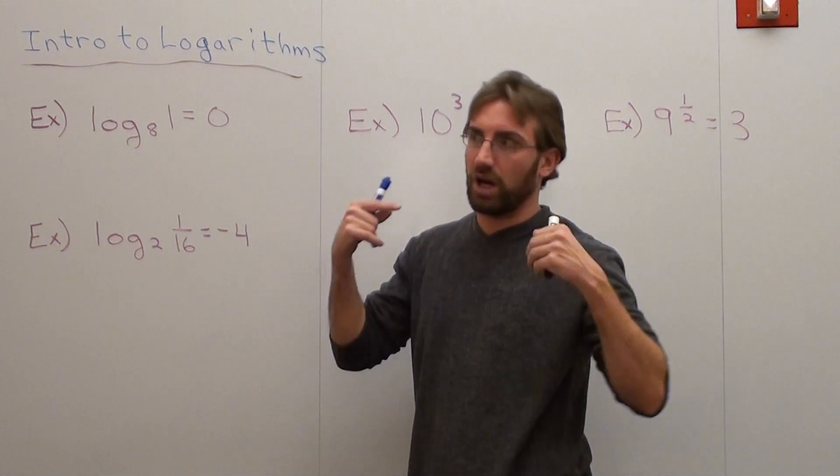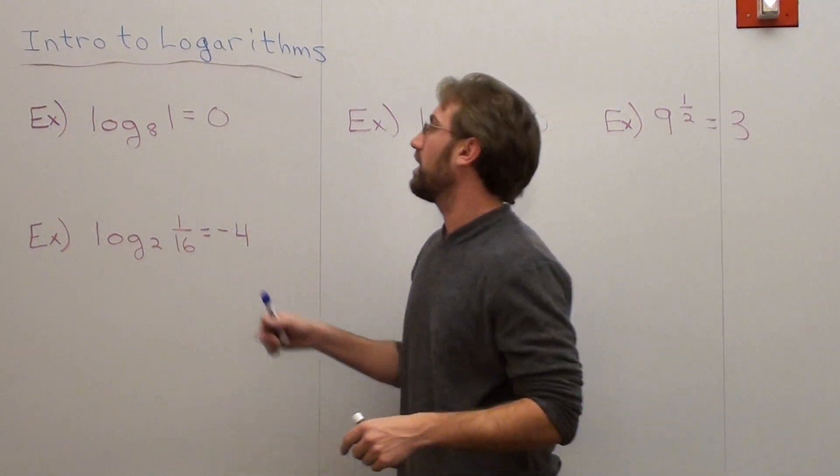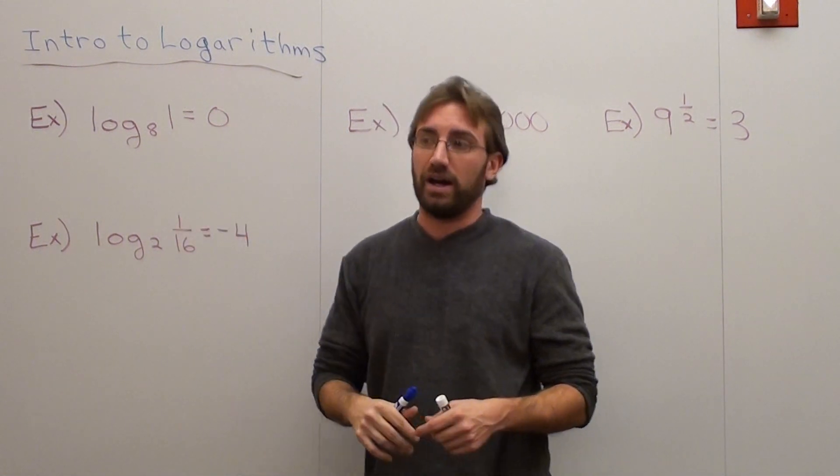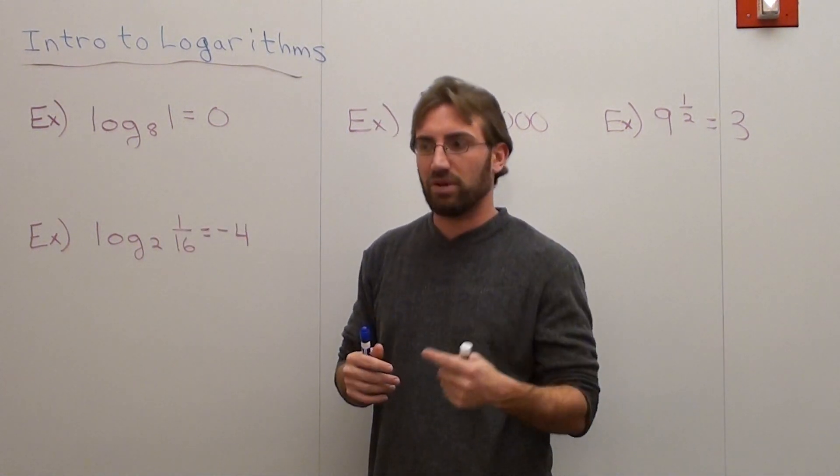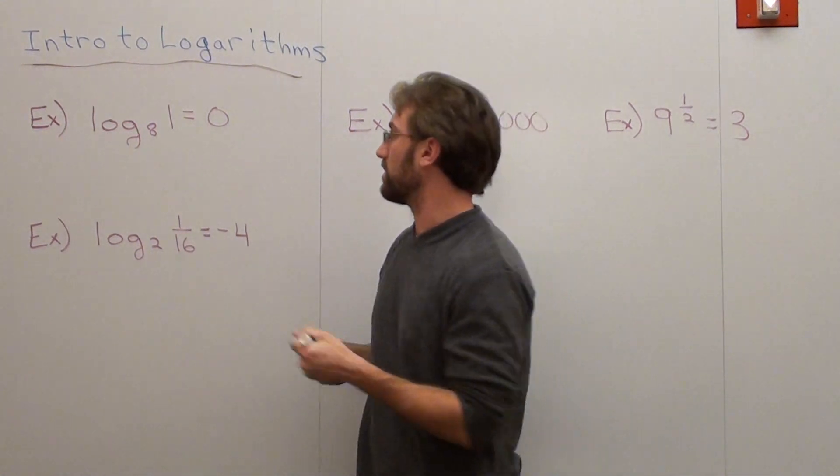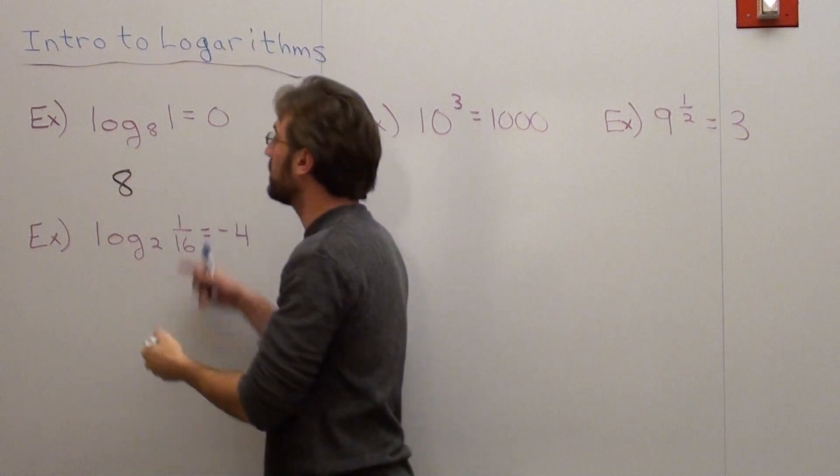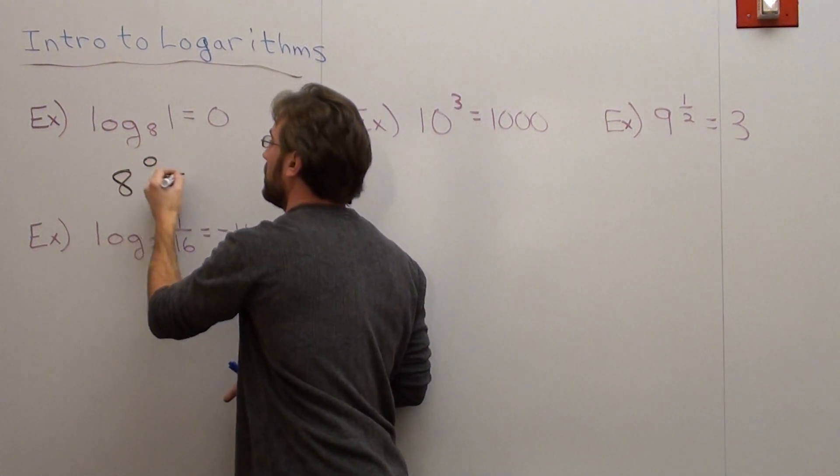Now if you want to do that, here's a little friendly reminder to try to help you out. It reads log base 8 of 1 equals 0. The base is always the number that's before the exponent. That's the way I always like to tell my students. So basically what it is, is 8, which is the base, to the 0 power equals 1.